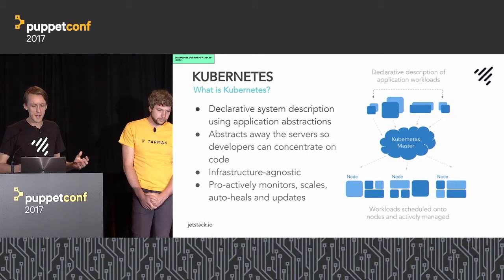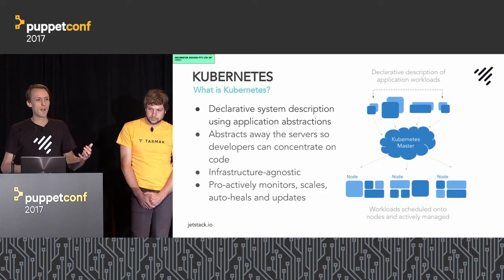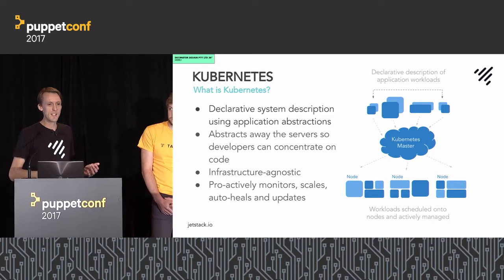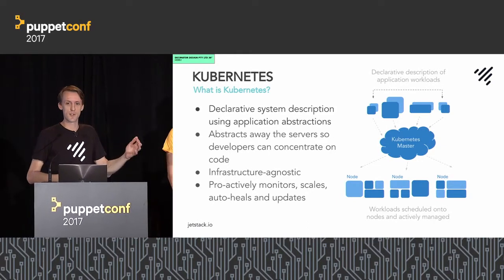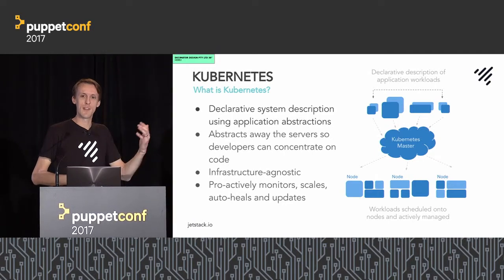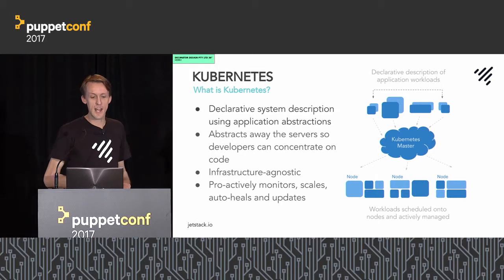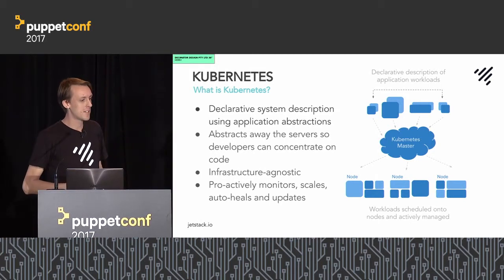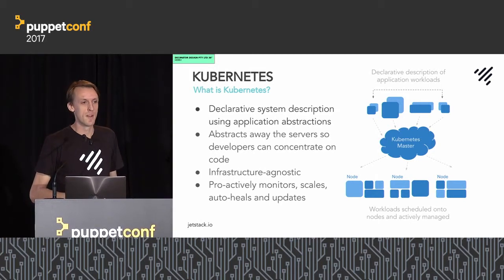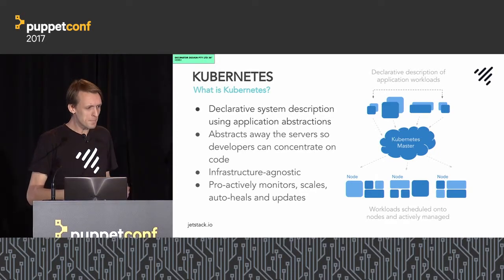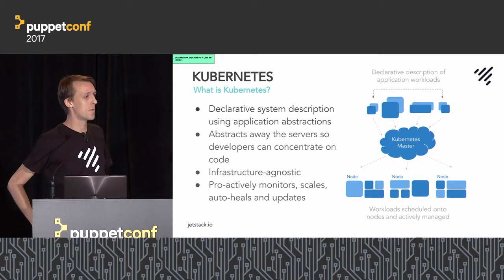The whole idea is that you want to be able to run containers at scale. Google have done this with a system called Borg, which enabled them to take declarative descriptions of application workloads and realize them on vast amounts of compute. Several years ago they open-sourced the lessons they learned, and it became one of the most popular active projects on GitHub. It's all about abstracting away the way developers think about realizing their applications on compute.